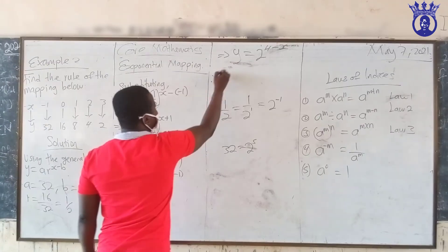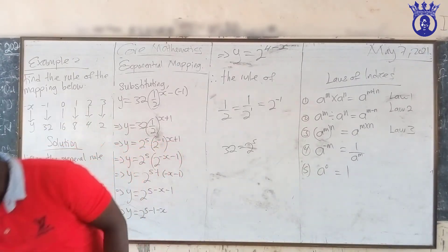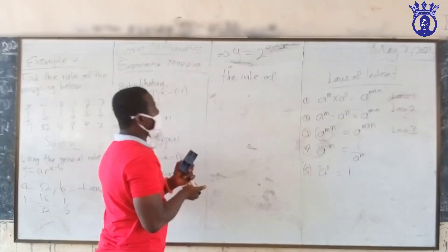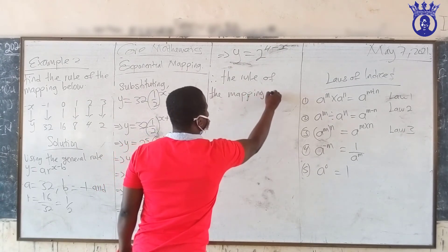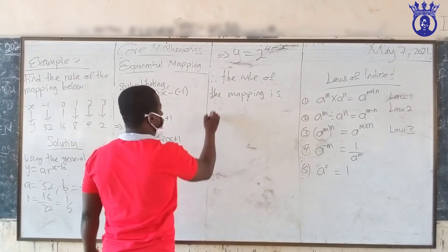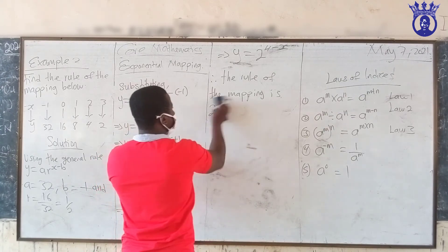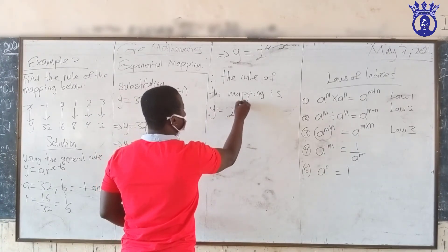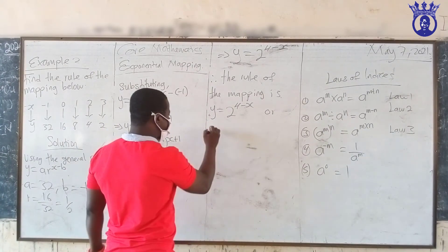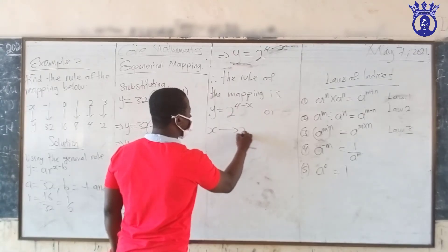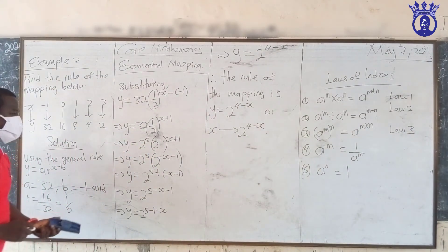Therefore, the rule of the mapping is: Y equals two raised to the power (four minus x). Or equivalently, x maps to two raised to the power (four minus x). That is how it is done.